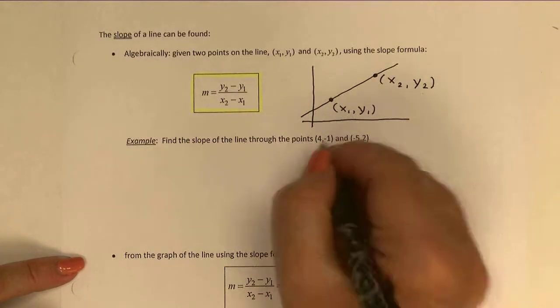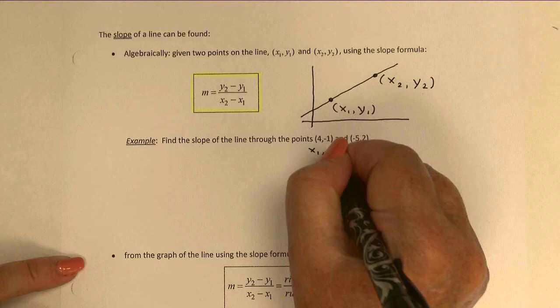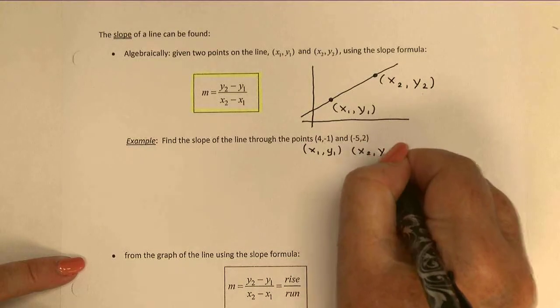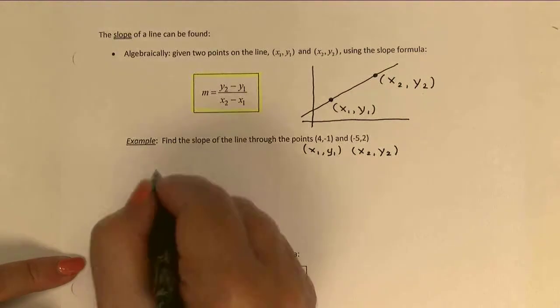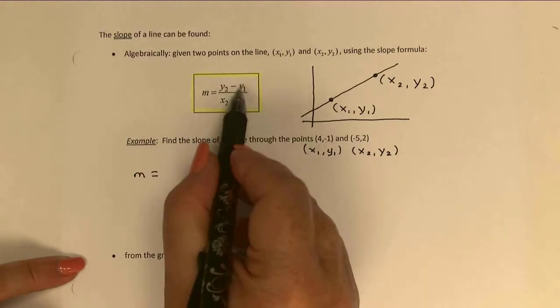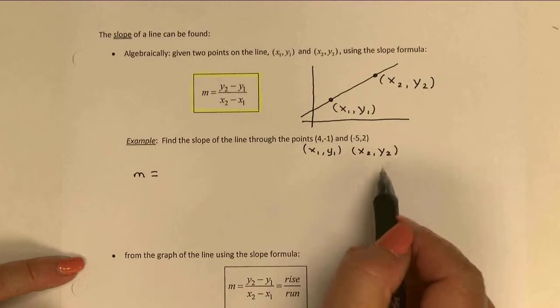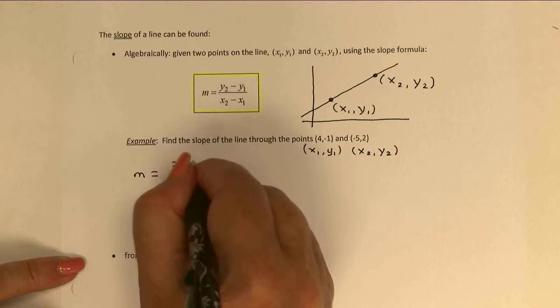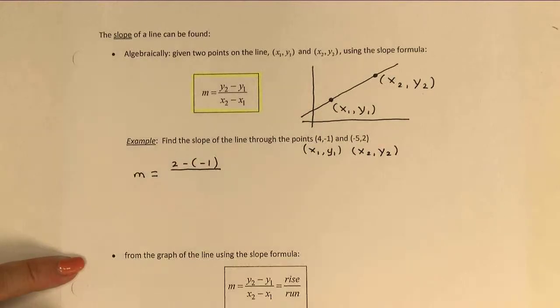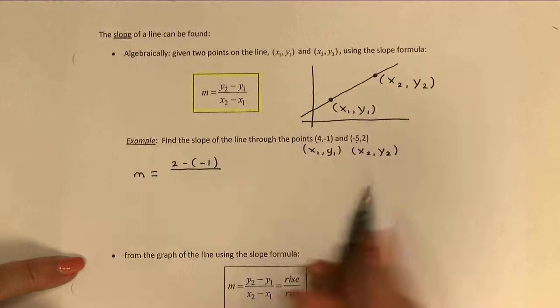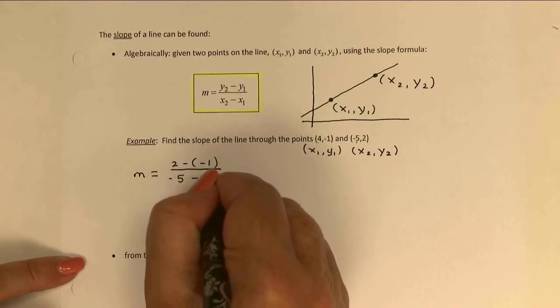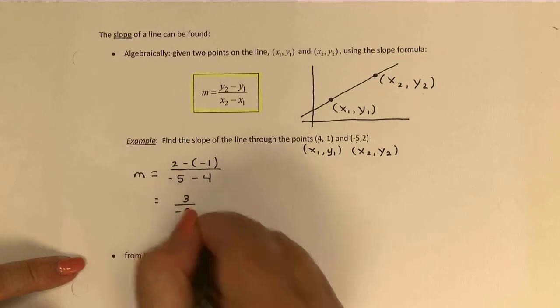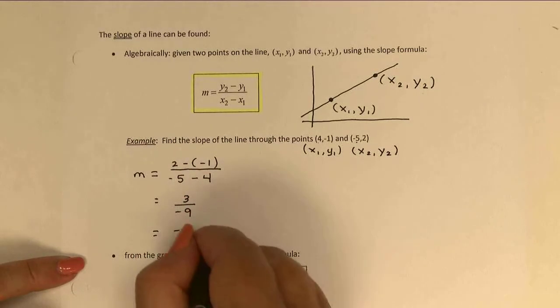I'm given my two points, and again, I'm going to refer to this first one as the (x₁, y₁), and the second one as the (x₂, y₂). And plugging those values into my slope formula, I'm going to get 2 subtract negative 1 divided by negative 5 subtract 4. That's going to give me 3 over negative 9, or in lowest terms, a slope of negative 1/3.